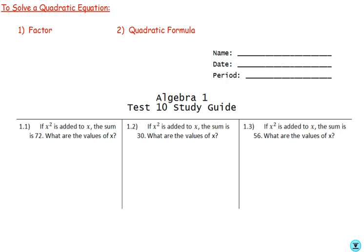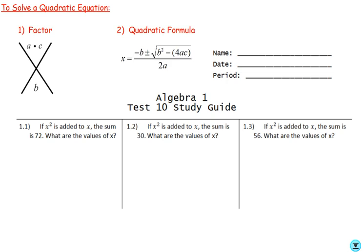Two notes to write in the top left-hand corner: to solve a quadratic equation we have two main ways — we either factor (using the big X or diamond method) or we use the quadratic formula. Factoring doesn't always work, so the quadratic formula is our backup plan. Make sure you have it written down: x equals negative b plus or minus the square root of b squared minus 4ac, all over 2a. Pop goes the weasel!